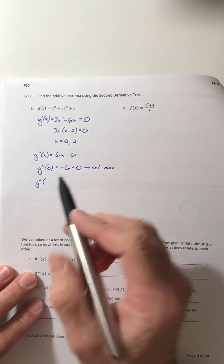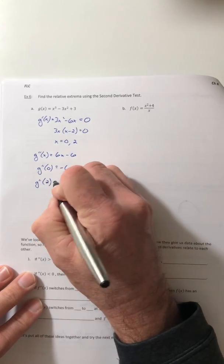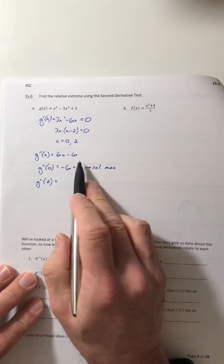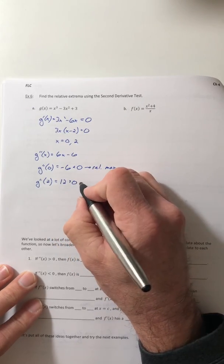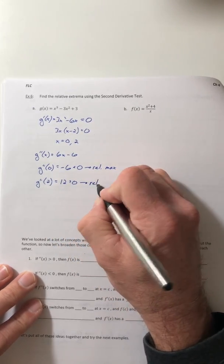Okay, so let's plug in the next one, so the 2. Plug it into the second derivative, and it comes out as a positive 12, so greater than zero, so that means you've got a relative min.